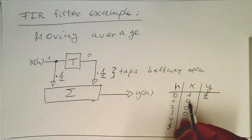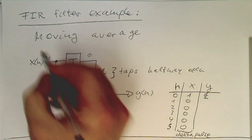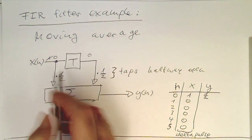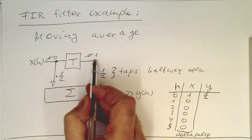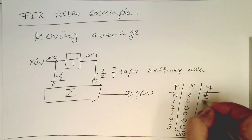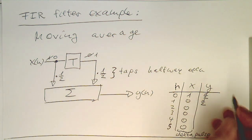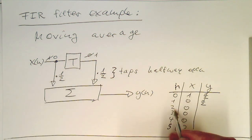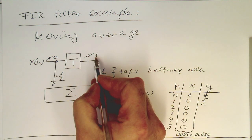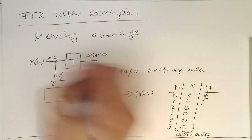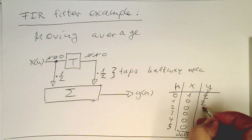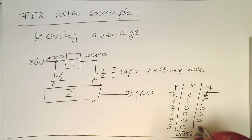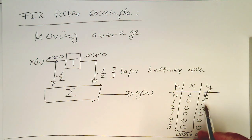At the next time step, x has become 0 again. But the 1 has progressed to the delay tap, so we're getting a half from there too — so again we get half. Then at the next time step, the 1 is replaced by 0 and the delayed value is also 0, so we're getting 0, 0, 0, and 0 again. Our impulse response is essentially half and half.